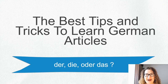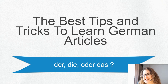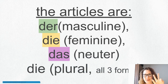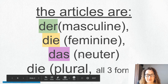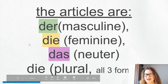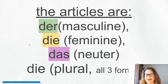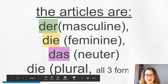This topic is about the best tips and tricks to learn German articles. So, what is it? Der, die oder das? The three articles are der, the masculine one, die, the feminine one, and das, that's neutrum — or here it says neuter. The one thing they have in common is in plural they are all die.